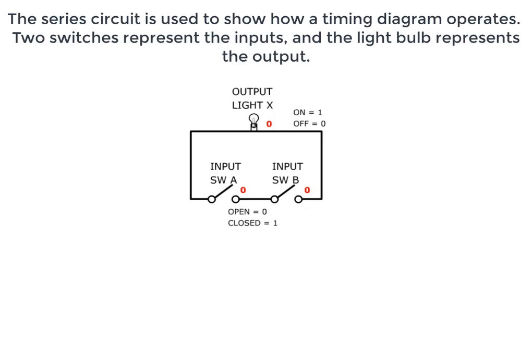The series circuit is used to show how a timing diagram operates. Two switches represent the inputs, and the light bulb represents the output.